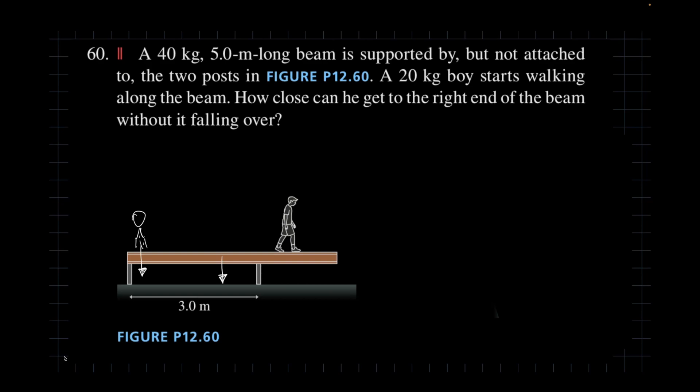What we're solving for is how far this person can walk to the right before this whole contraption topples over, meaning that the contact with this left fulcrum is lost altogether and it starts tipping off.